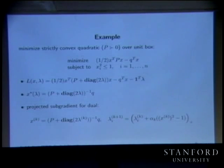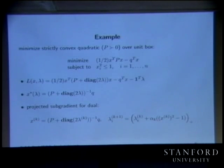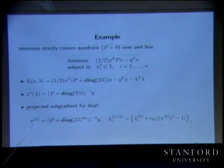At least one component of x star pops outside the unit box at each step. Here's a heuristic for producing a feasible point: if a coordinate is bigger than one, make it one; if it's less than negative one, make it negative one. So you just project.